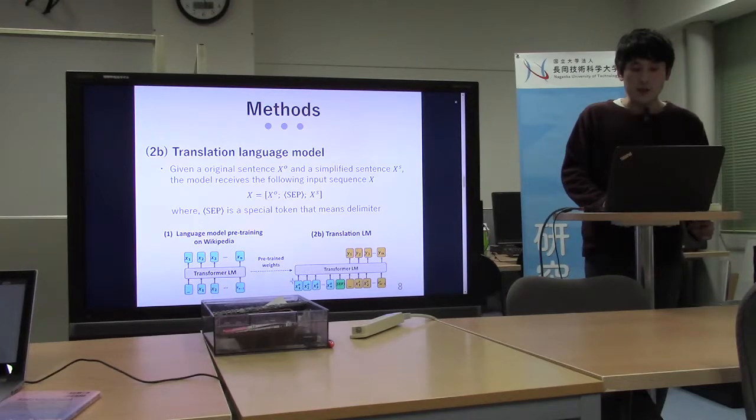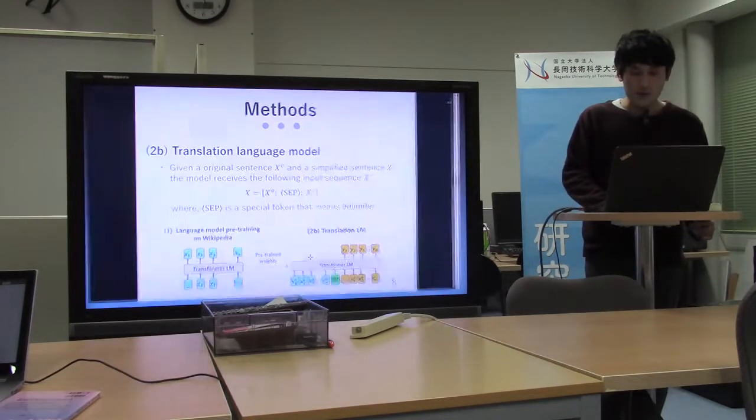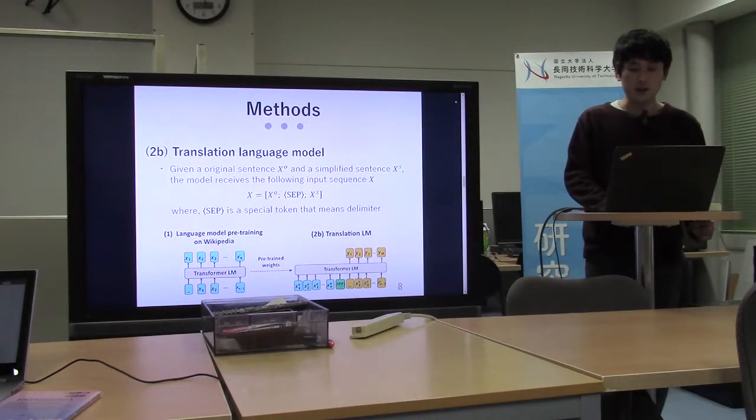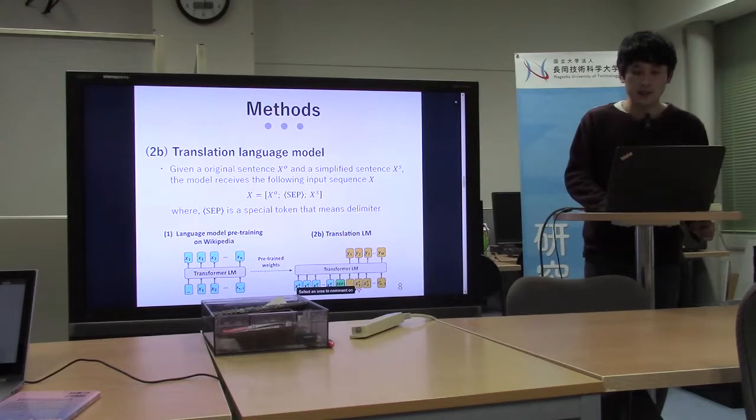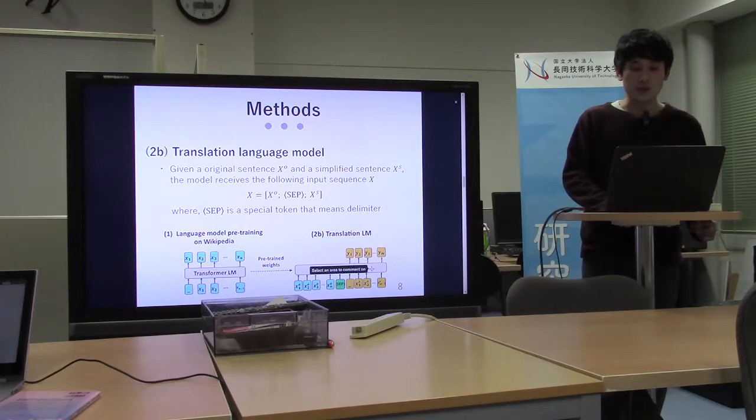In inference time, the model receives the original sentence and delimiter token. After that, it generates the next simplified token and receives the token which was previously generated. This process is repeated until generating the end-of-sentence token.